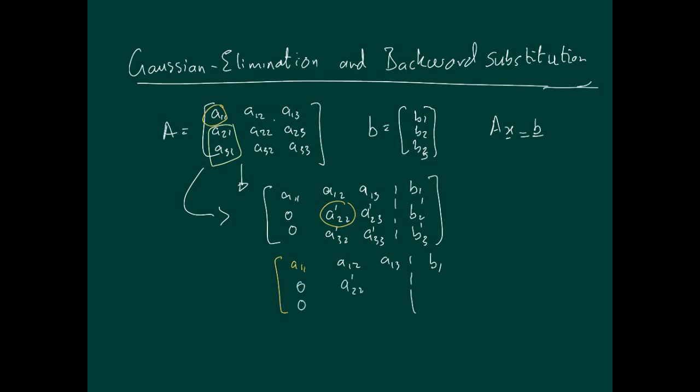This will remain dash, this is not changing anymore, but this is, so here you'll have a zero, and here you'll have a33 double dashed indicating something further different, and b3 double dashed. That basically is now in upper triangular form. The non-zero entries are here.